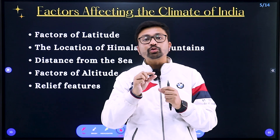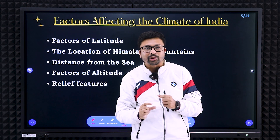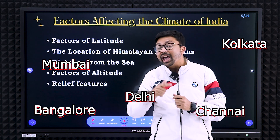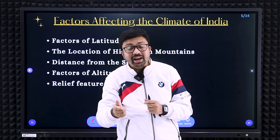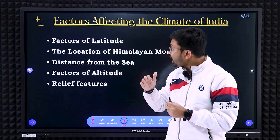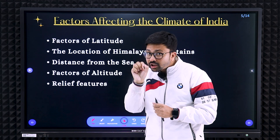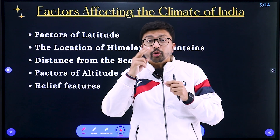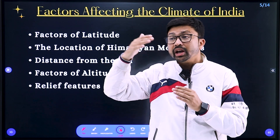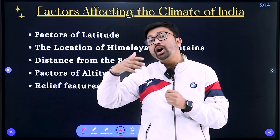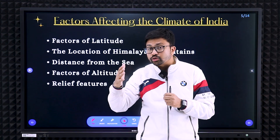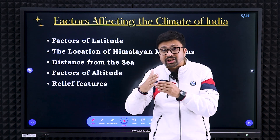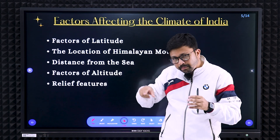If one city is in the northern side and another in the southern side, obviously the southern city's temperature will be more as it is close to the equator. As we go north, the temperature decreases. Regarding the Himalayan mountain — it helps in two ways: first, it stops the cold Siberian wind from entering India, keeping Indian temperatures comparatively higher. On the other hand, it blocks the southwest monsoon, causing rain in the Indian subcontinent.